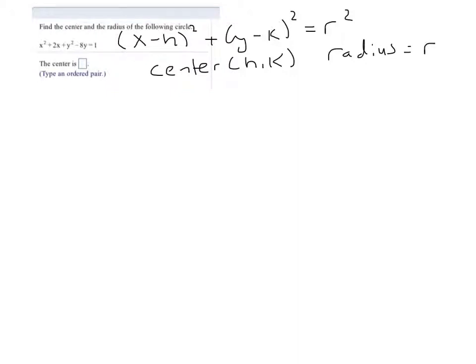So we need to get it into this form, and the way that we're going to be able to get it into this form is by completing the square. Now when you complete the square, basically we need to group all the x's together, all the y's together, and then we'll move everything else to the right-hand side.